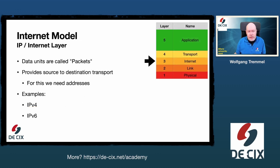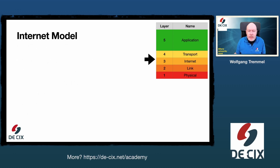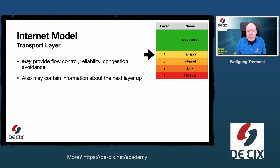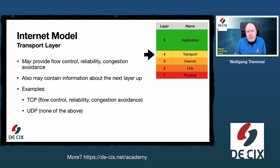Remember the internet model — the layered model, the protocol stack of the internet. On layer 3, the so-called IP layer, data units are called packets. The IP layer provides source-to-destination transport, and for this we need IP addresses. Protocols on the internet layer are IPv4 and IPv6. Above the internet layer we have the transport layer, which provides sophisticated features like flow control, reliability, or congestion avoidance, and it may contain information about the next layer up. Example protocols for the transport layer are TCP and UDP.